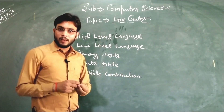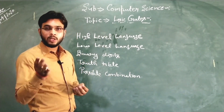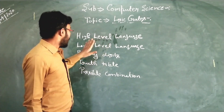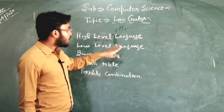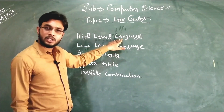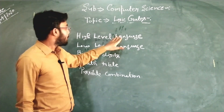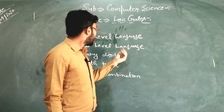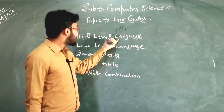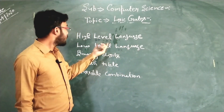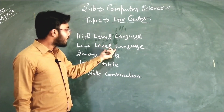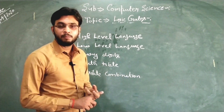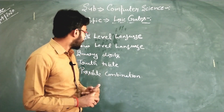Every user or programmer who gives instructions to the computer does so in high level language. However, the computer does not understand high level language — it converts every instruction given in high level language into low level language. In low level language, there are only two numbers: 0 and 1, which are also known as binary digits or machine language.